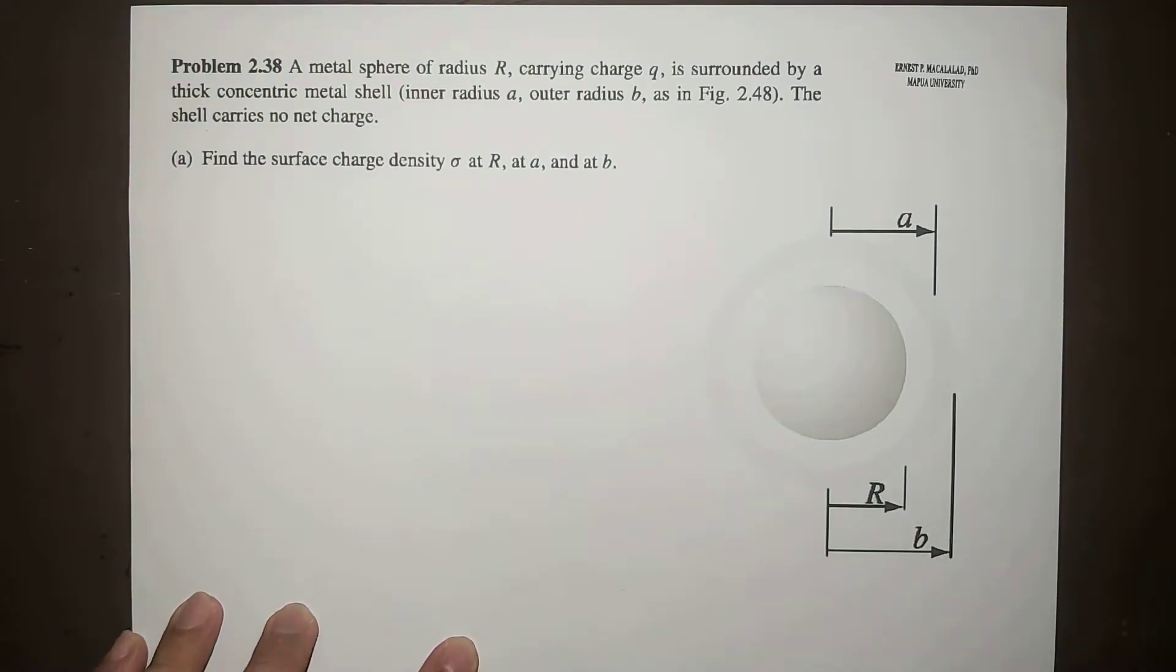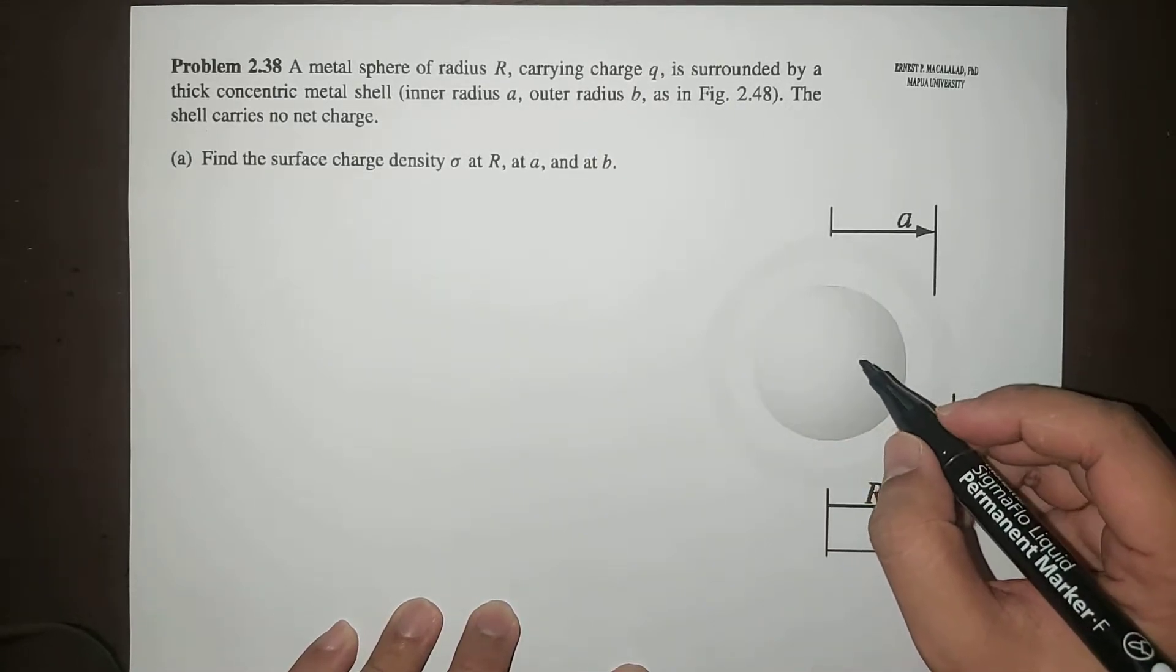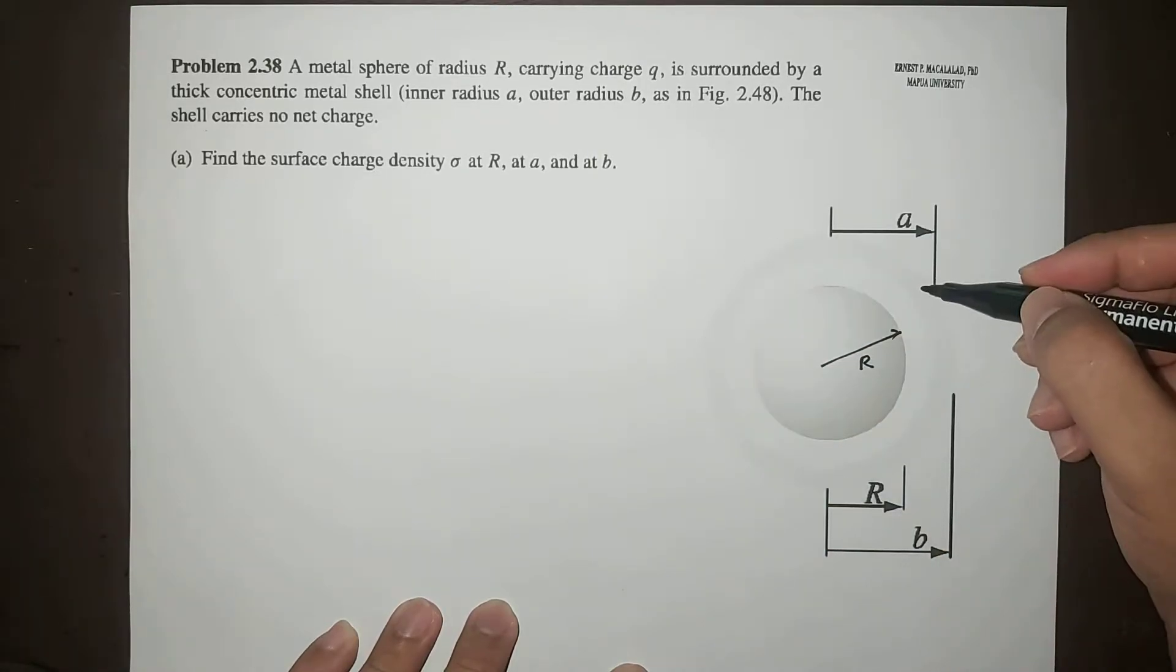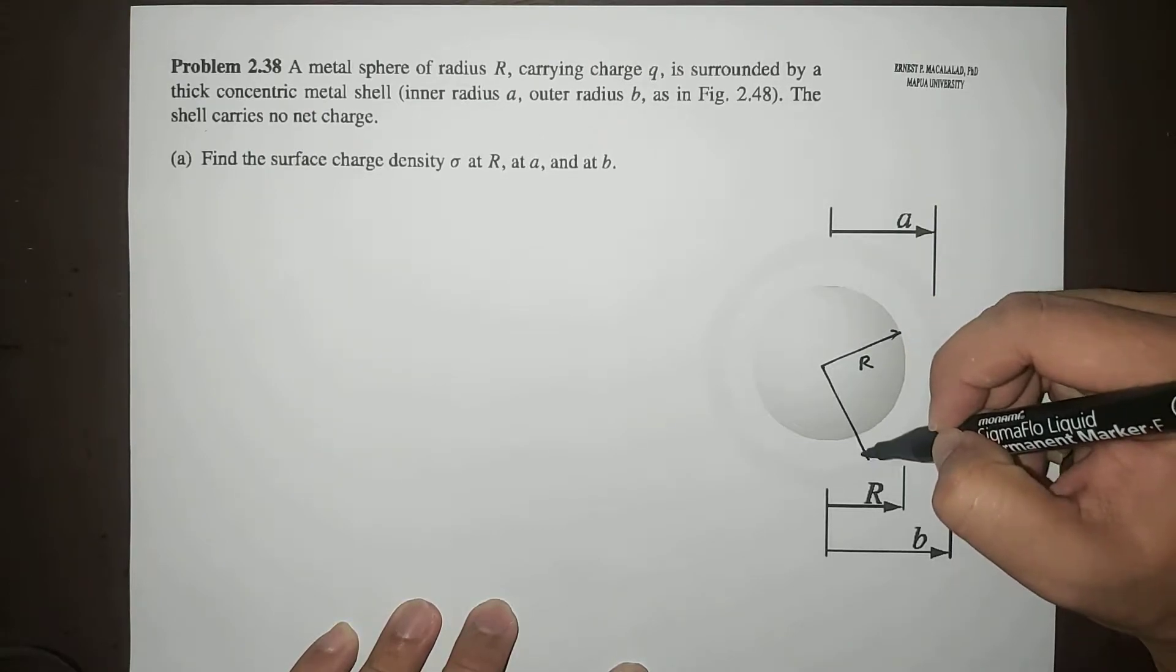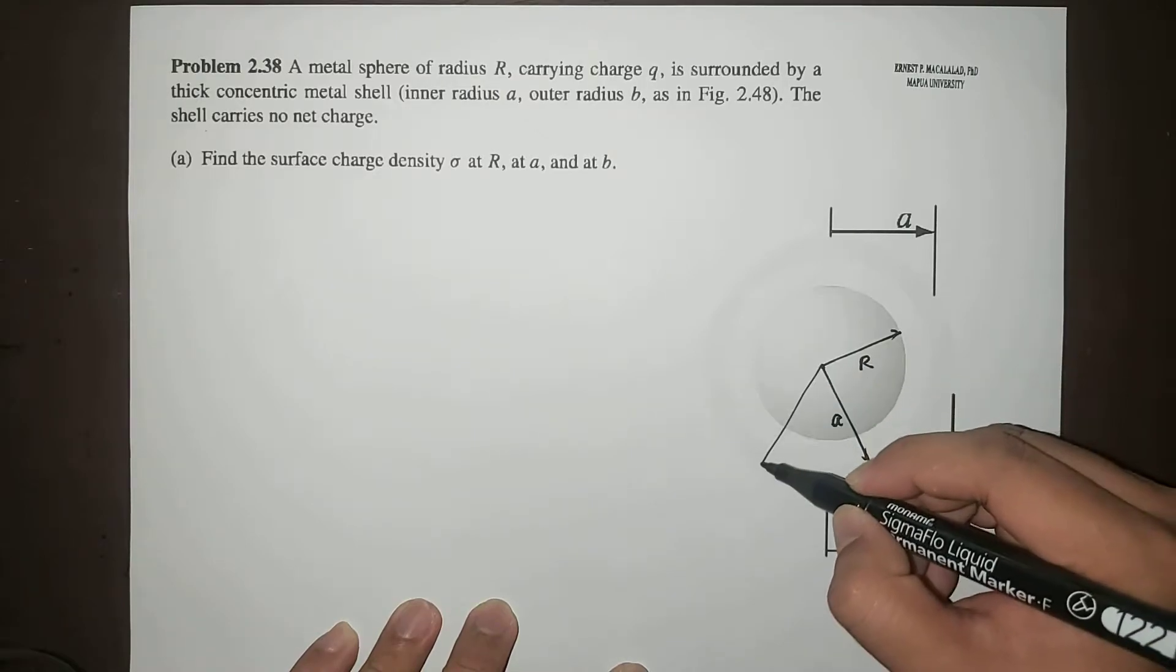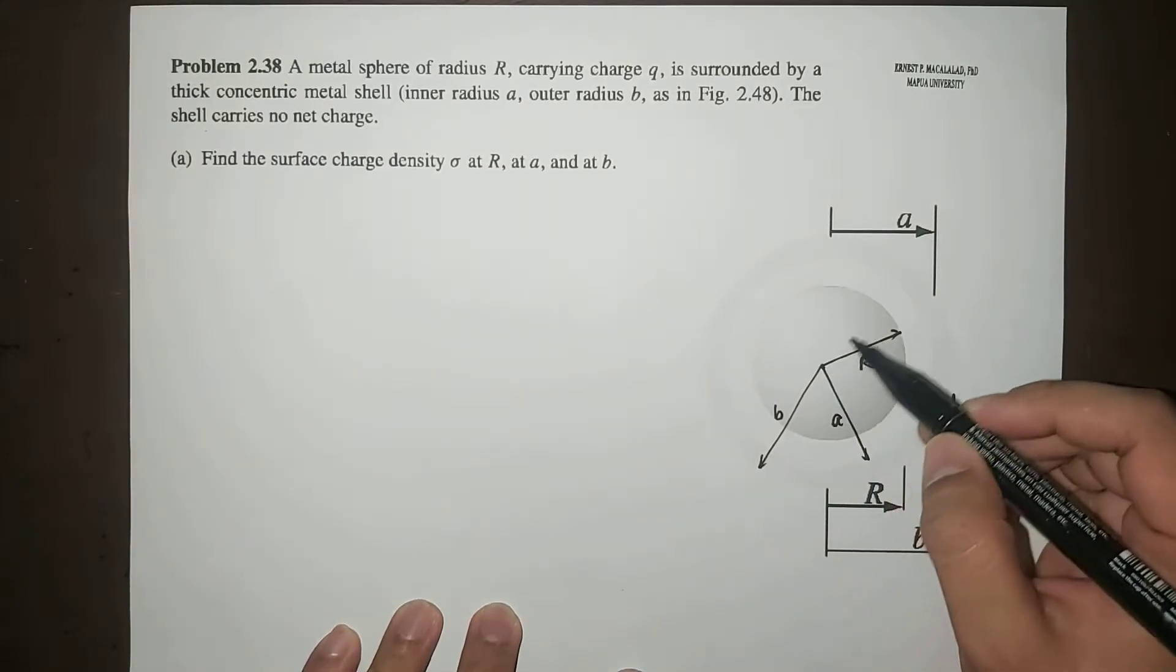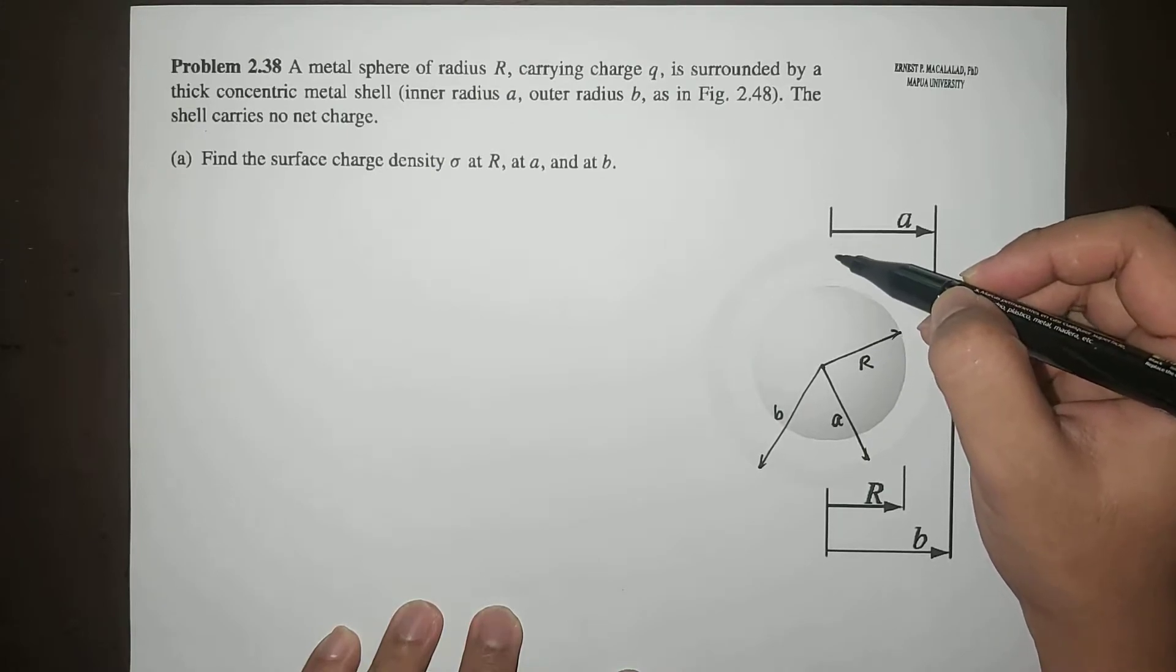This is an example of a system that involves conductors. This is your metal sphere of radius R, and this is your spherical shell, where the inner radius is A and the outer radius is B. This is a solid sphere and this is a hollow shell of two radii.